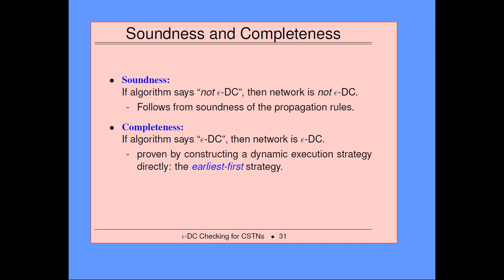Those are the rules. In the paper, we prove soundness and completeness. We prove completeness by constructing an earliest first strategy and proving that it works when the algorithm says the network is epsilon-DC. The earliest first strategy turns out to be quite a bit more complicated in the case of epsilon dynamic consistency because if you execute P at time 10, it doesn't mean you can't execute something at time 11 — it's just that the execution decision can't depend on the value of P.